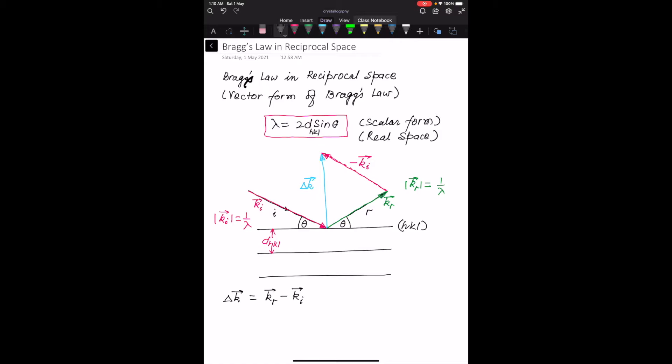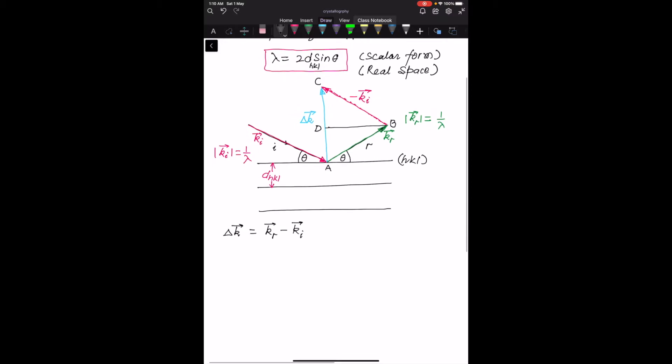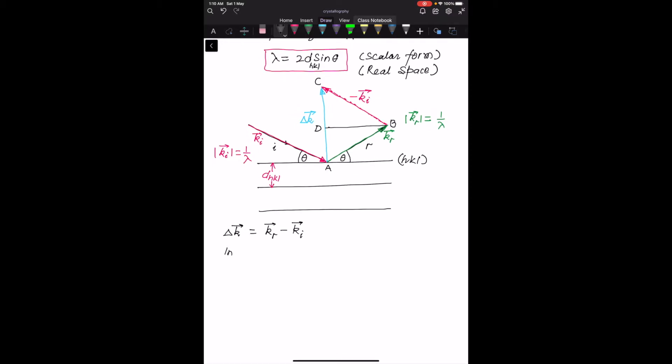To complete the proof, we require a construction which is very simple. Let us label these points. Let me call this A, B, C, and from B I have drawn a line perpendicular to the HKL lines. Let us call that point intersecting the delta K vector at point D. Now we have two triangles: triangle ABD and triangle CBD.